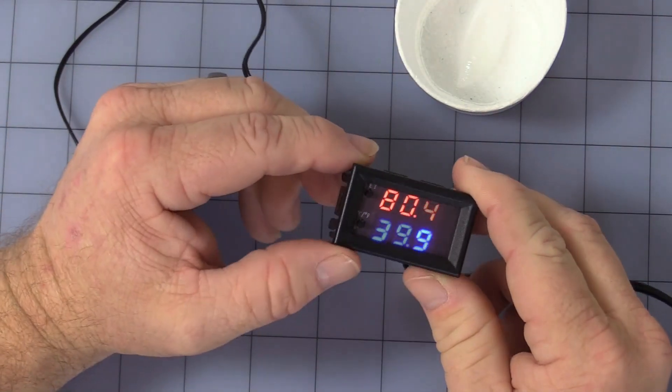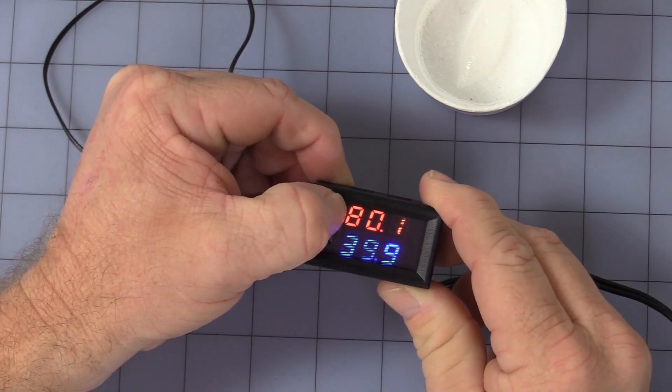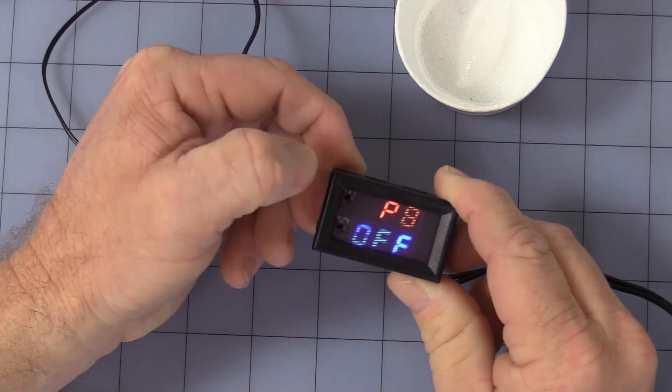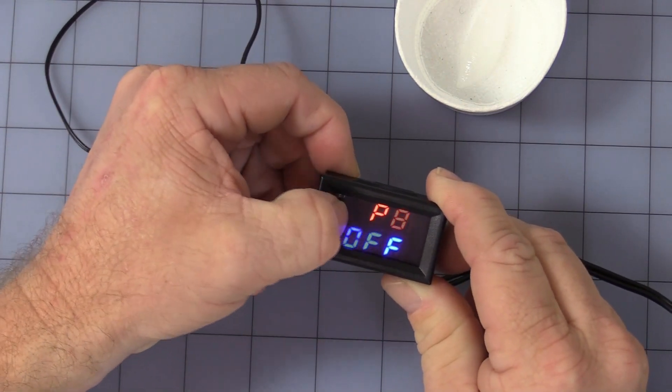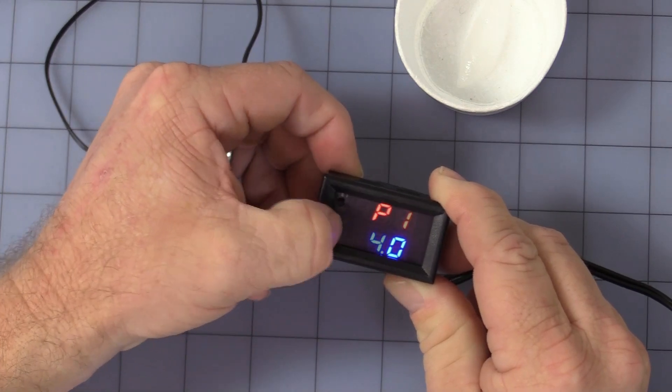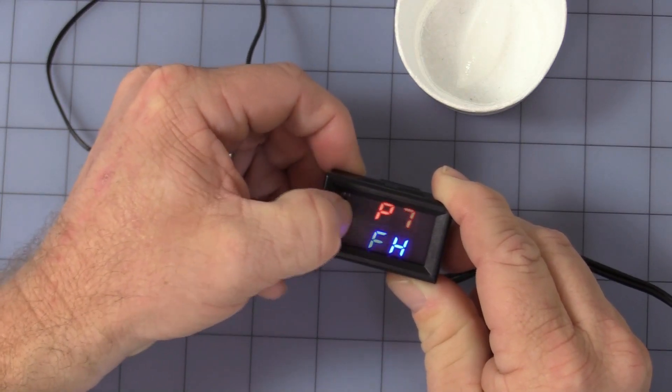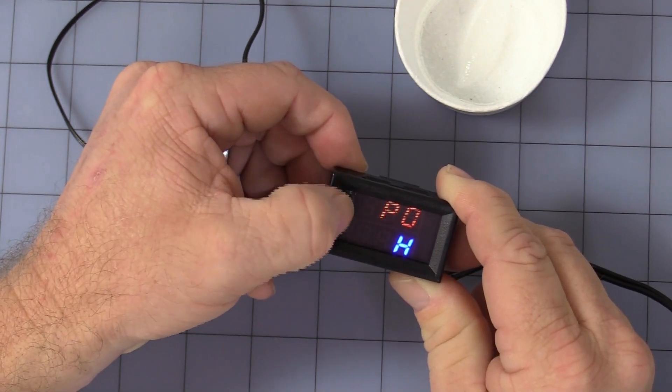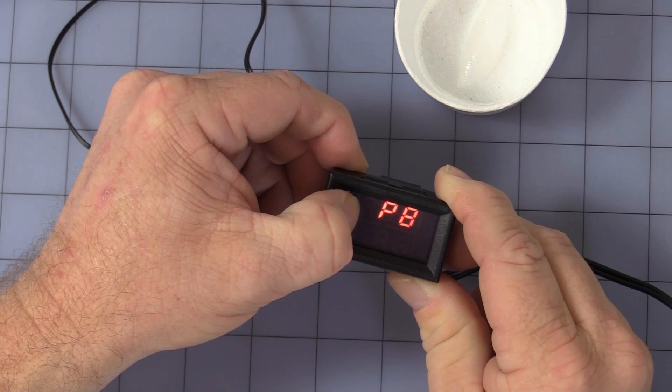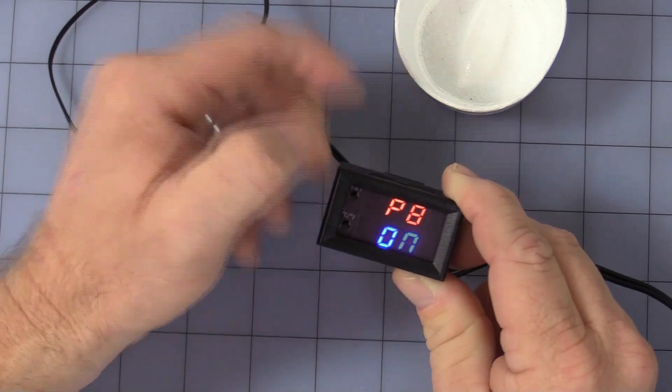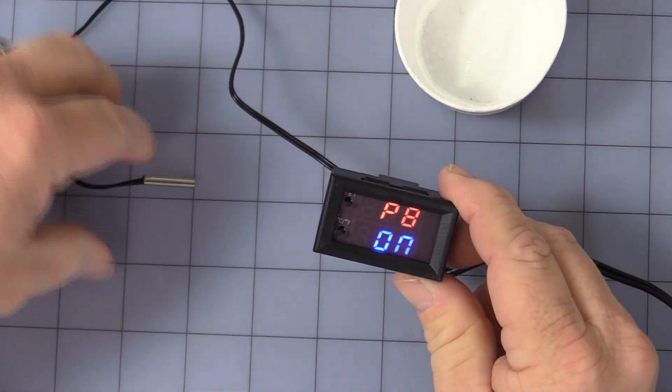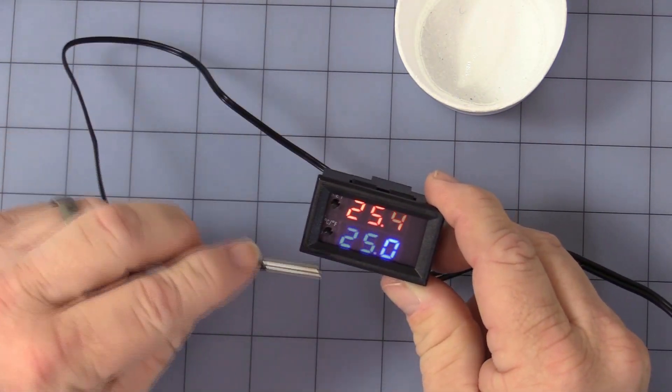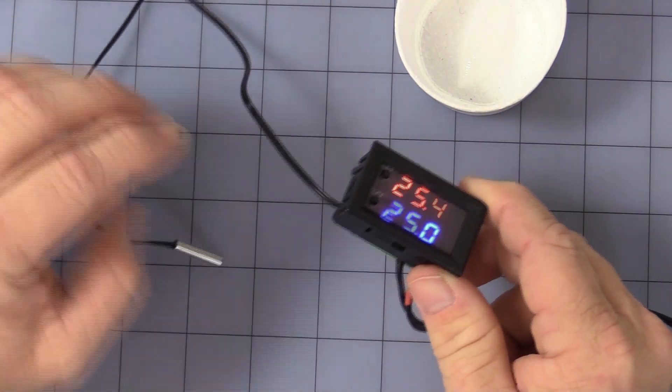Final one is P8, which is a simple factory reset to all the factory settings. Hold the button for three seconds. Navigate to P8, hold both buttons. P8, yeah, it's difficult to hold both buttons sometimes. One more try here. It's flashing, change to on, simply leave it. And when it goes back to running the program, as you can see, it's back to Celsius, which is a factory setting.